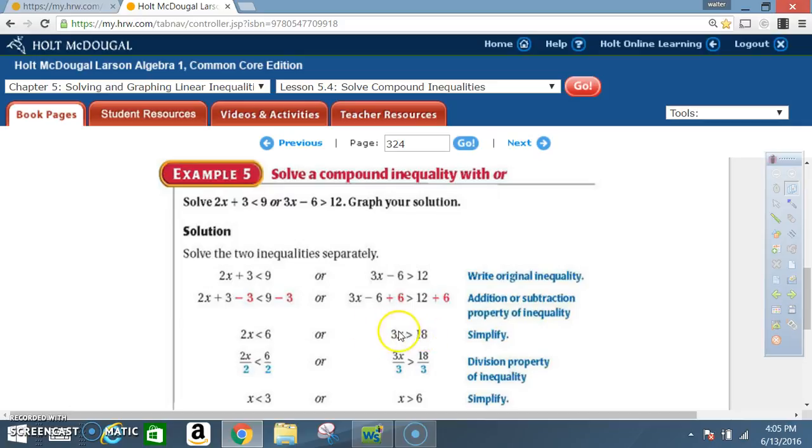Now I'm at a one-step equation that involves multiplication. The opposite of multiplication is division. So therefore, I would divide both sides by 3. 3 divided by 3 is 1. So I'm left with just 1x. 18 divided by 3 is 6. So x is greater than 6.